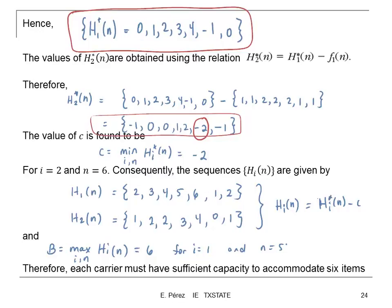Therefore, each carrier must have sufficient capacity to hold 6 units per cycle. On Wednesday, we're going to repeat this exercise with a different number of carriers so you can see how the analysis and capacity requirement change. We'll also go through the lab and discuss horsepower calculations.